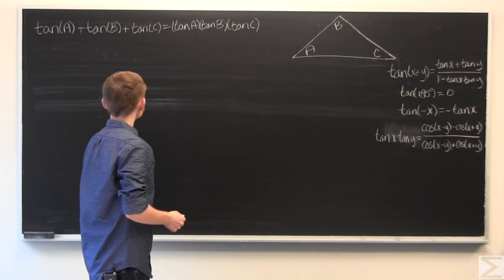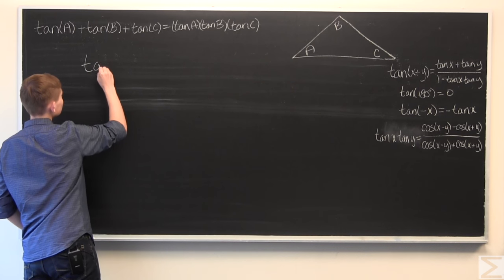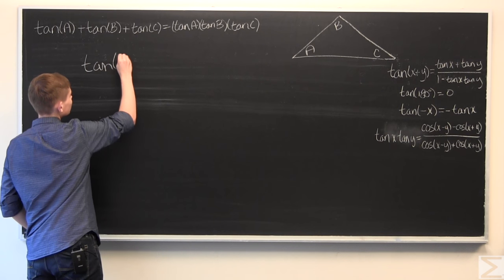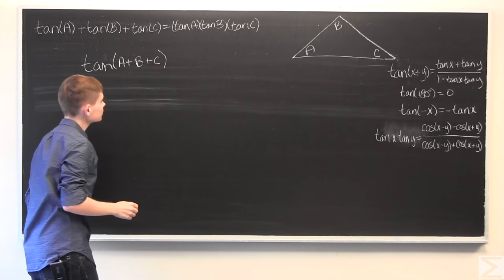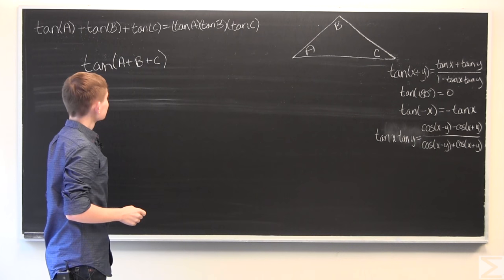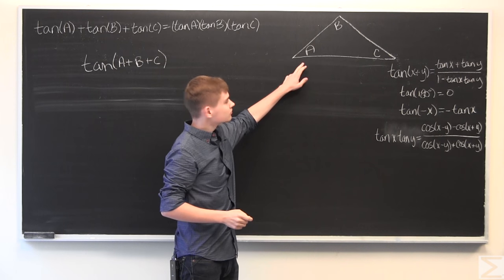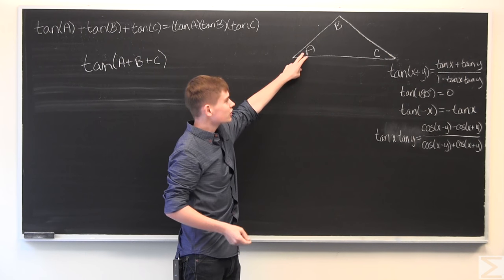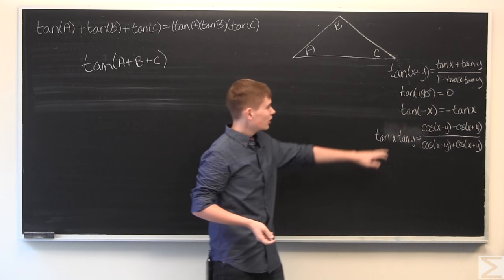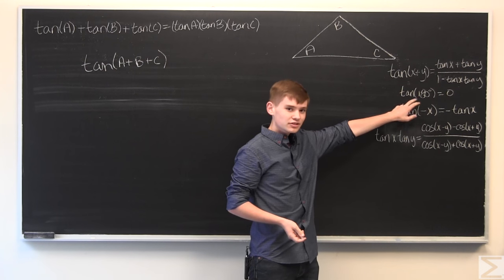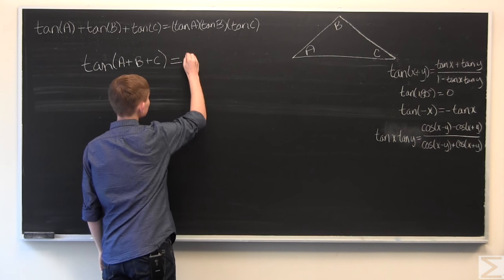Alright. To begin, let's start with the tangent of the sum of the angles. The sum of the interior angles of a triangle are always going to be equal to 180 degrees. And the tangent of 180 degrees is always equal to zero. So, this is equal to zero.